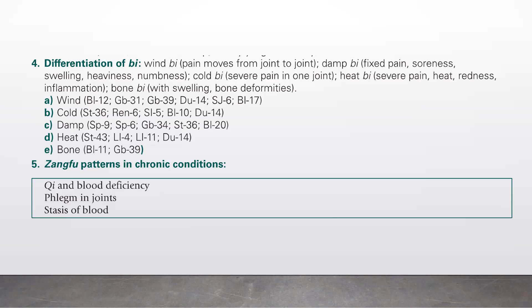For Wind Bi, we use Bladder 12, GB 31, GB 39, Du 14, Sanjiao 6, Bladder 17. For Cold Bi: Stomach 36, Ren 6, SI 5, Bladder 10, Du 14. For Damp Bi: Spleen 9, Spleen 6, GB 34, Stomach 36, Bladder 20. For Heat Bi: Stomach 43, Liver 4, LI 11, Du 14. For Bone Bi: Bladder 11, GB 39.